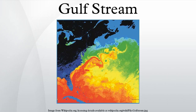The Gulf Stream, together with its northern extension towards Europe, the North Atlantic Drift, is a powerful, warm, and swift Atlantic Ocean current that originates at the tip of Florida, and follows the eastern coastlines of the United States and Newfoundland before crossing the Atlantic Ocean. The process of western intensification causes the Gulf Stream to be a northward accelerating current off the east coast of North America. At about 40°N and 30°W, it splits in two, with the northern stream crossing to northern Europe and the southern stream recirculating off West Africa.